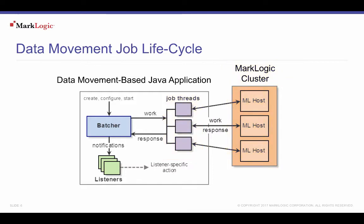This diagram illustrates key operations and components common to data movement jobs. First, create a Data Movement Manager to manage jobs. This object is intended to be long-lived and can manage multiple jobs. The Data Movement Manager is not represented in this diagram, but it is the agent through which you create, start, and stop jobs.